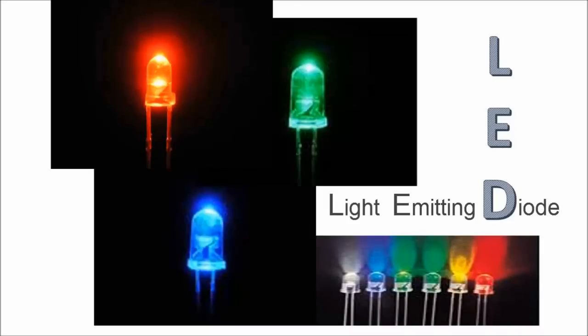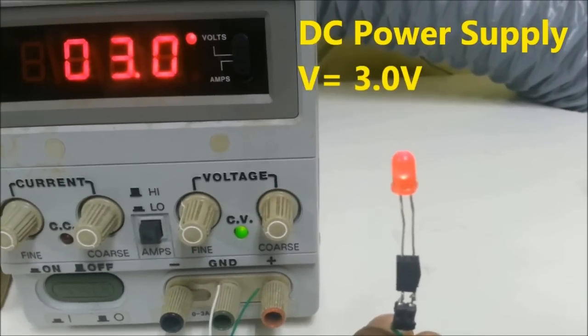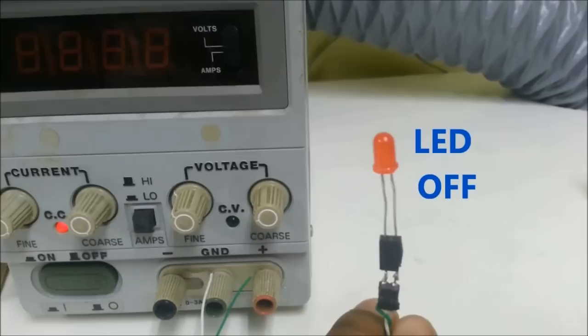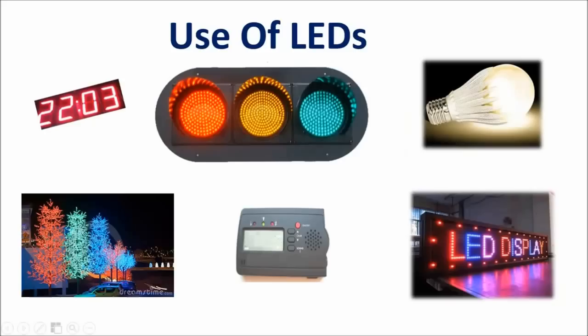LED is a very popular electronic component. It is a diode and it emits light when voltage is applied across it. We applied three volts to glow it. It comes with different colors, different sizes and shapes, and it is used almost everywhere.